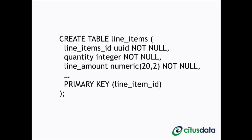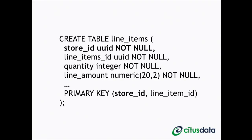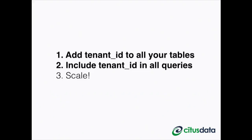A simple example: you have a line items table with a primary key on the line item ID. The two changes you make are adding the store ID — the tenant in this example — as a column, and including the store ID in the primary key. From now on, the line item ID is only unique inside the store, which is good enough for most use cases. You also need to include the tenant ID in your queries.